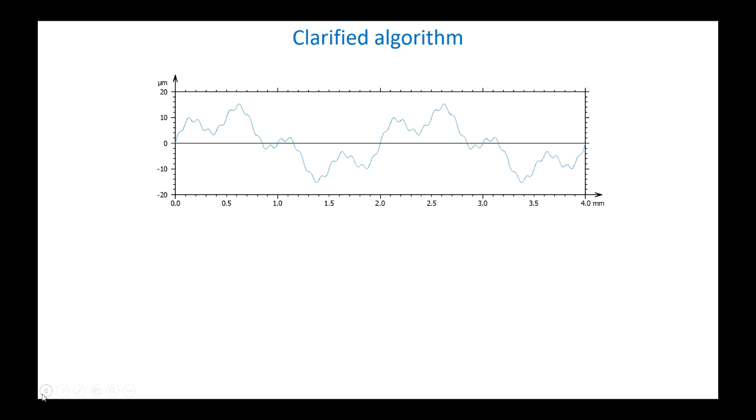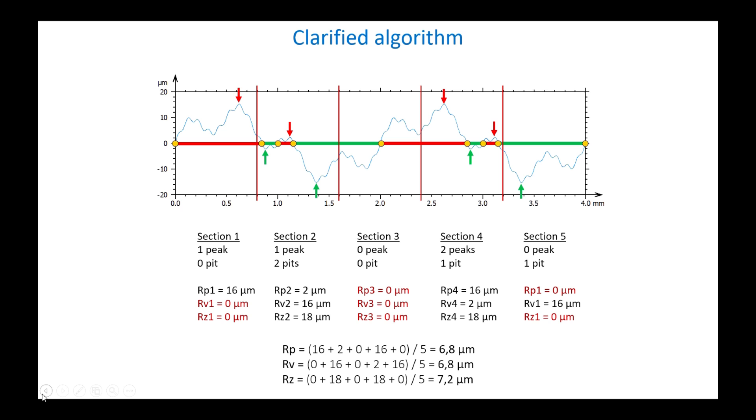The method of calculating these parameters has been clarified, particularly when a portion above the profile extends between two section lengths. A first pass identifies the portions on either side of the reference line. Then the extremum of each portion is quantified, and only then are counted by section length. In the end, the average is calculated. On waviness profiles, it can be common for certain extrema to be absent on certain section lengths. In this case, they are counted as zero, which has the effect of reducing the average.